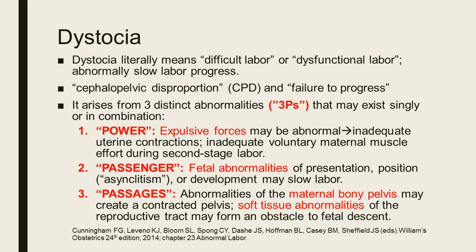Power refers to maternal expulsive forces, which may be inadequate uterine contractions or inadequate voluntary maternal muscle effort during the second stage of labor. The second P, passenger, refers to fetal abnormalities of presentation or an abnormal position of the fetus, including asynclitism, that can also impair labor. The third P, passages, refers to abnormalities of the maternal bony pelvis creating a contracted pelvis, or soft tissue abnormalities forming an obstacle to fetal descent.